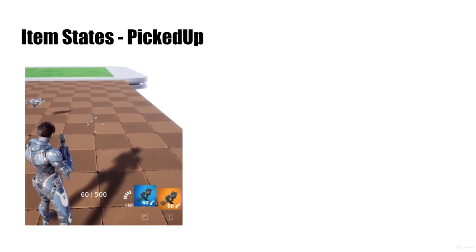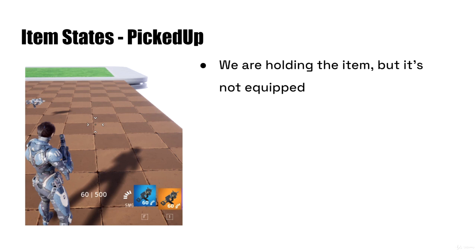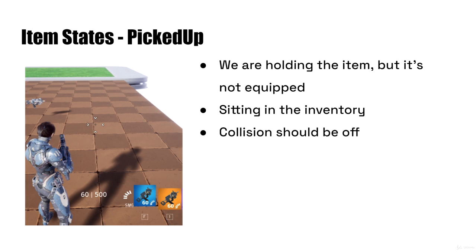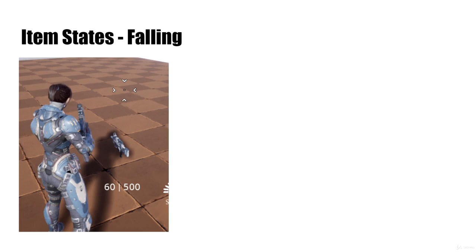The next state is the picked up state. That's when we've already picked up the item — whether it's a weapon or something else — and we are not holding it and it's not equipped in our hand; that would be the equipped state. This is when we already have an item in our hands and we're picking up an additional item and sticking it into the inventory. The collision should be off, and in fact visibility should also be off — we shouldn't even be able to see the actual mesh in the game.